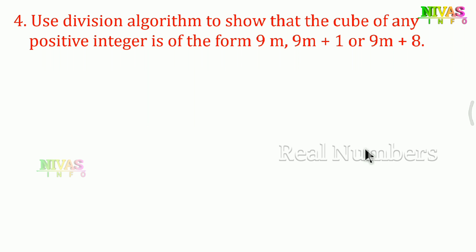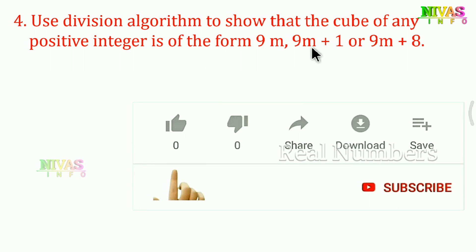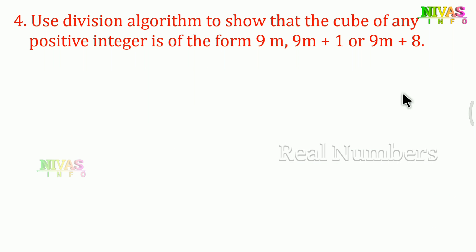Here we need to prove these forms: 9m, 9m+1, or 9m+8. Since 9 and 3 are divisible, we'll use 3 for our algorithm. Let positive integer be 'a' and b=3. We'll show that any cube can be written in one of these three forms.